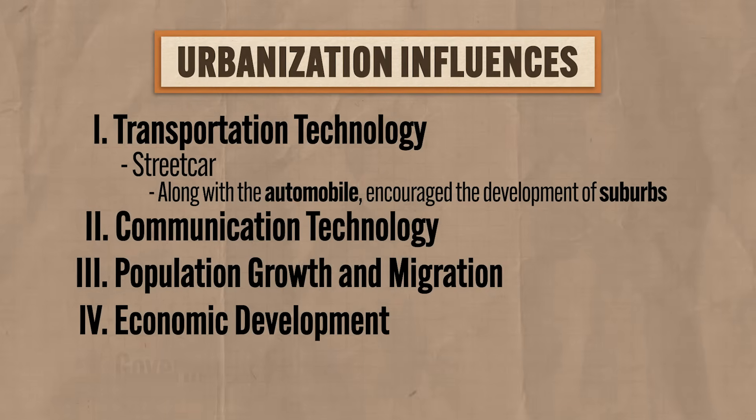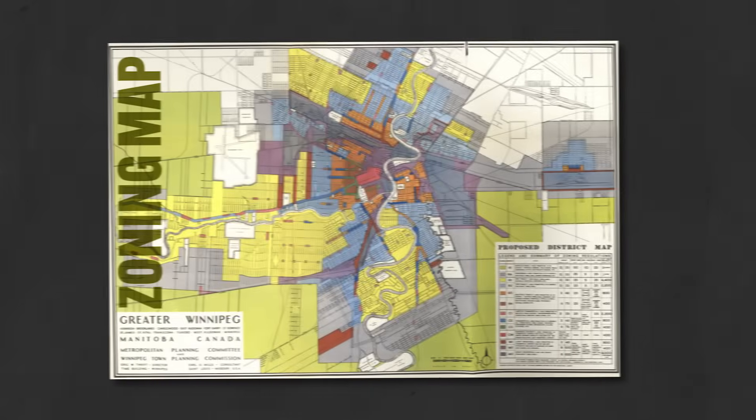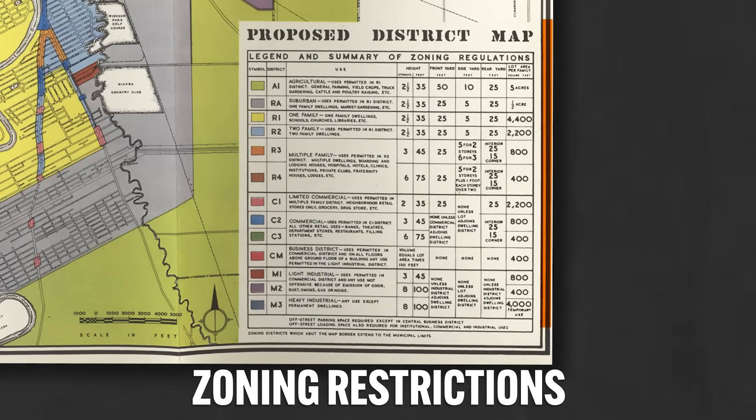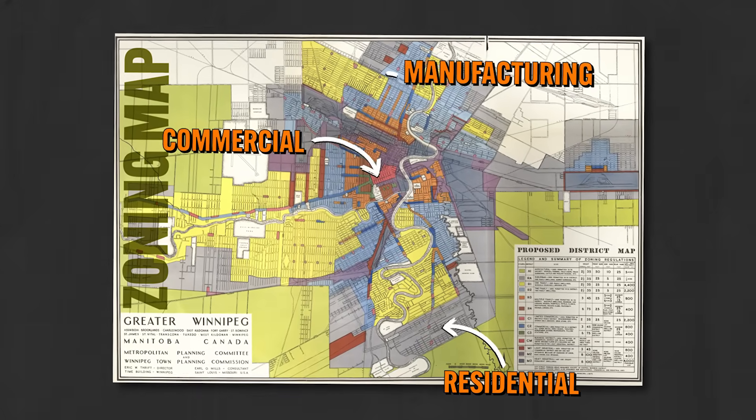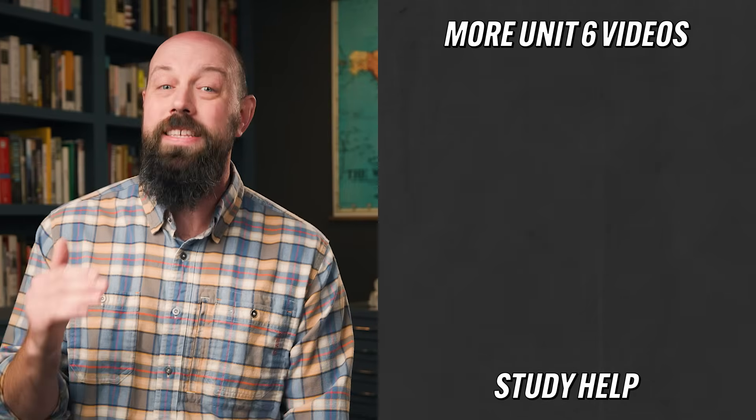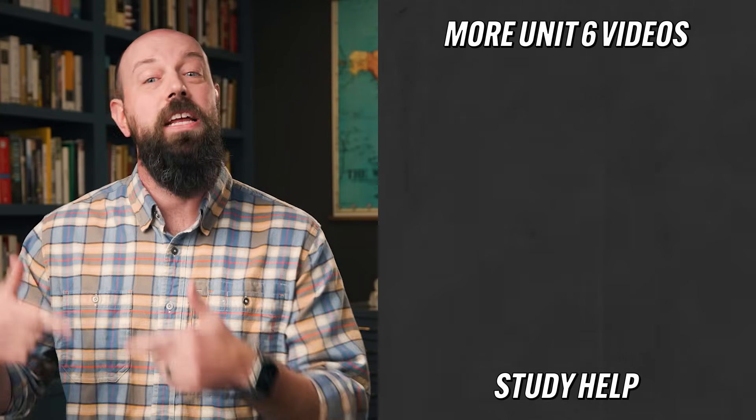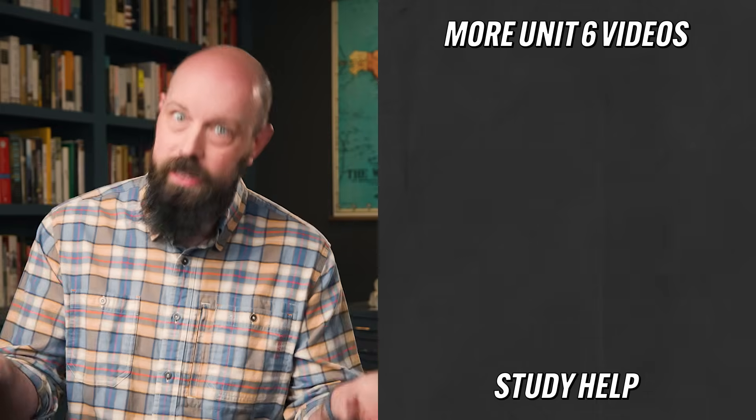The fifth factor influencing urbanization is government policy. Government always plays a major role in the growth or decline of cities. For example, city governments pass zoning restrictions which determine how land can be used — whether a particular piece of land is used for residential, commercial, or manufacturing purposes. Depending on how zoning laws are allotted, that can have big consequences for how fast or slow a city grows. Additionally, governments that spend money on infrastructure to support their economic function often see significant urban growth, while those that don't spend that money often see very little growth.